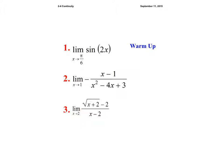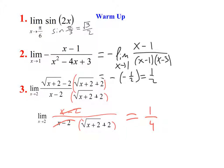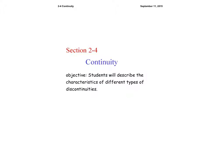We have a warm-up where you simply have to do these limits. For the first one I simply had to plug it in. For the second one I first factored it in order to cancel out the x minus one. For the third one I did the conjugate and that was one over four. Take down these warm-ups and let's move on.